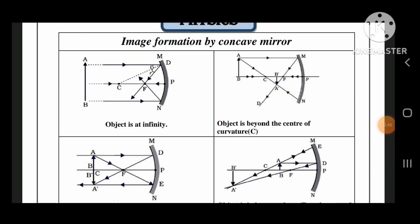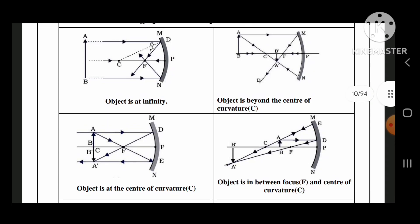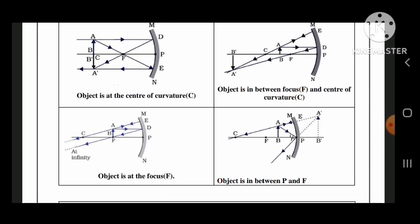This is the most important one which is asked in your exams. Image formation by concave mirror. Object is at infinity. Object is behind the center of curvature. Object is at the center of curvature. Object is in between the focus. Object is in between P and F.